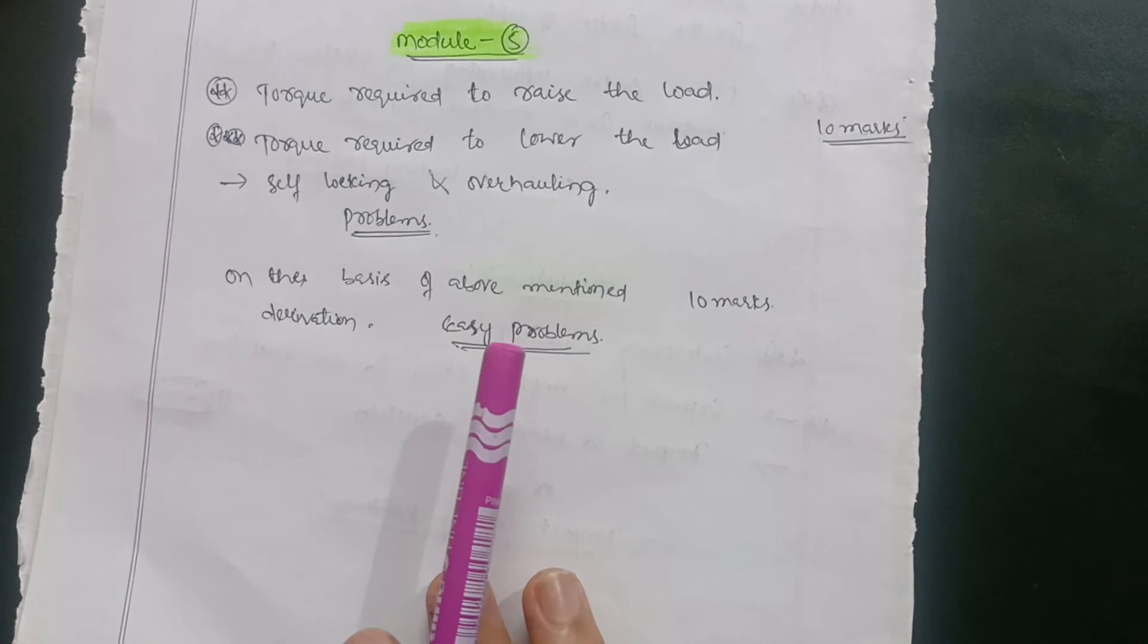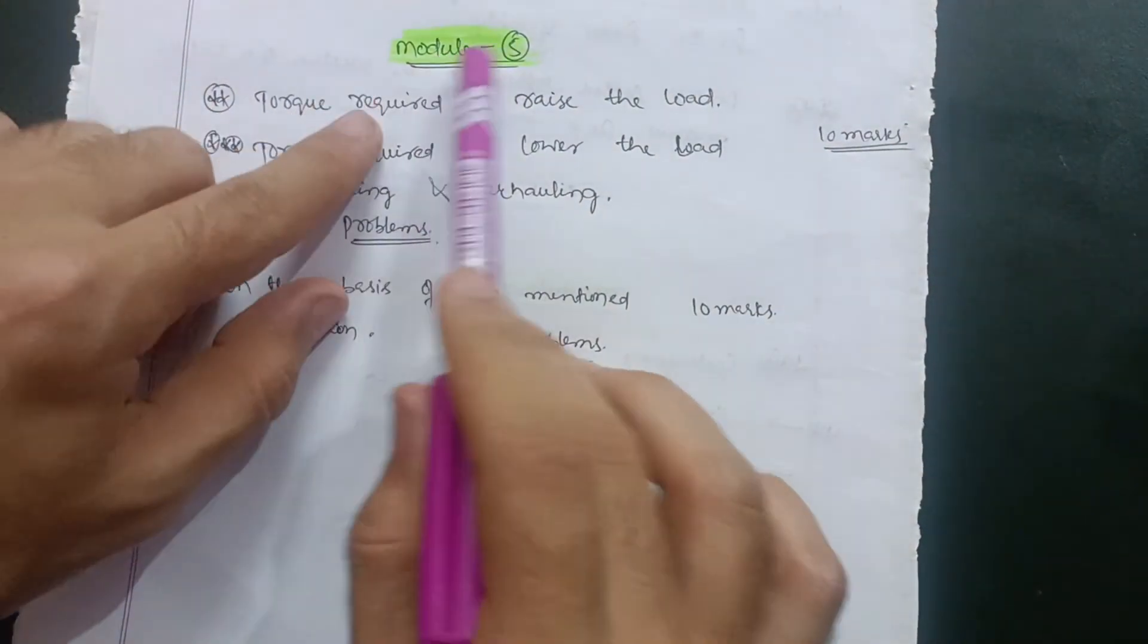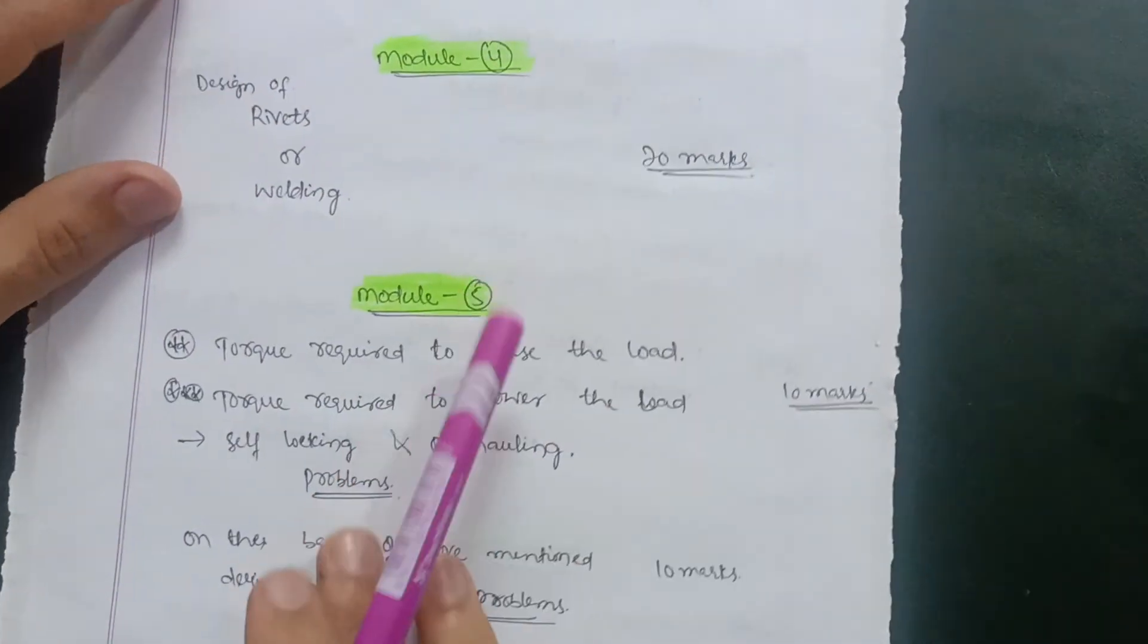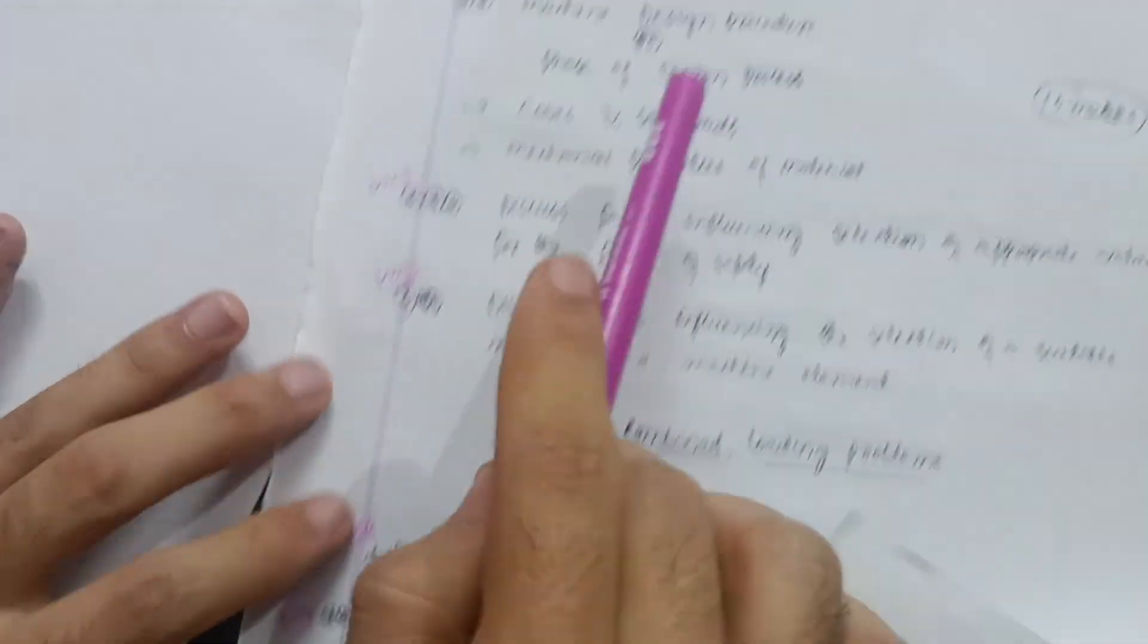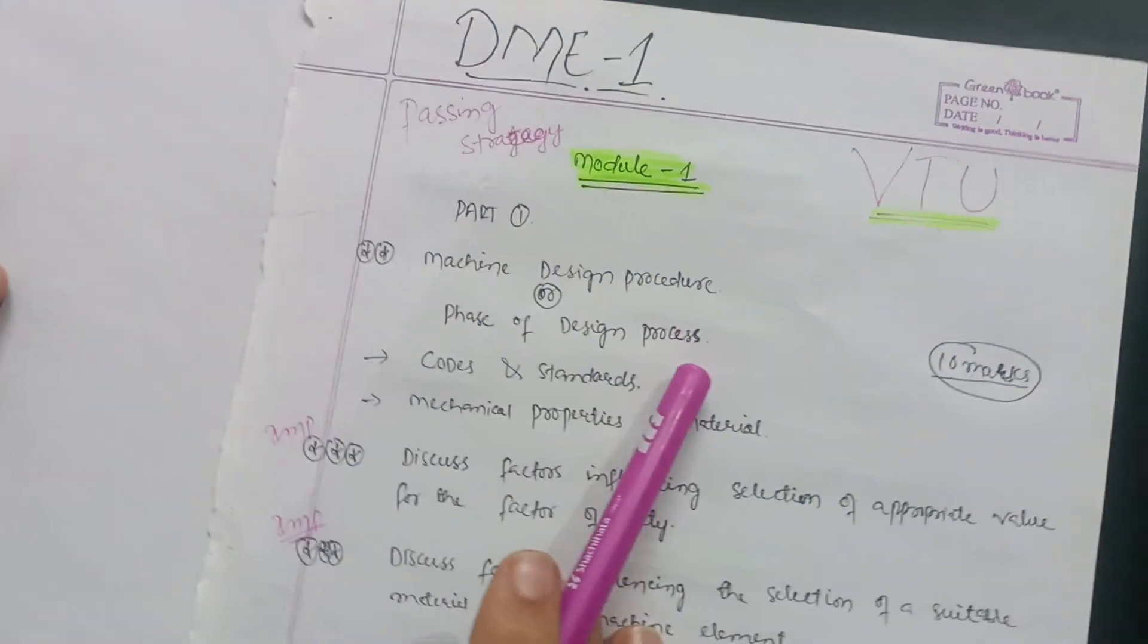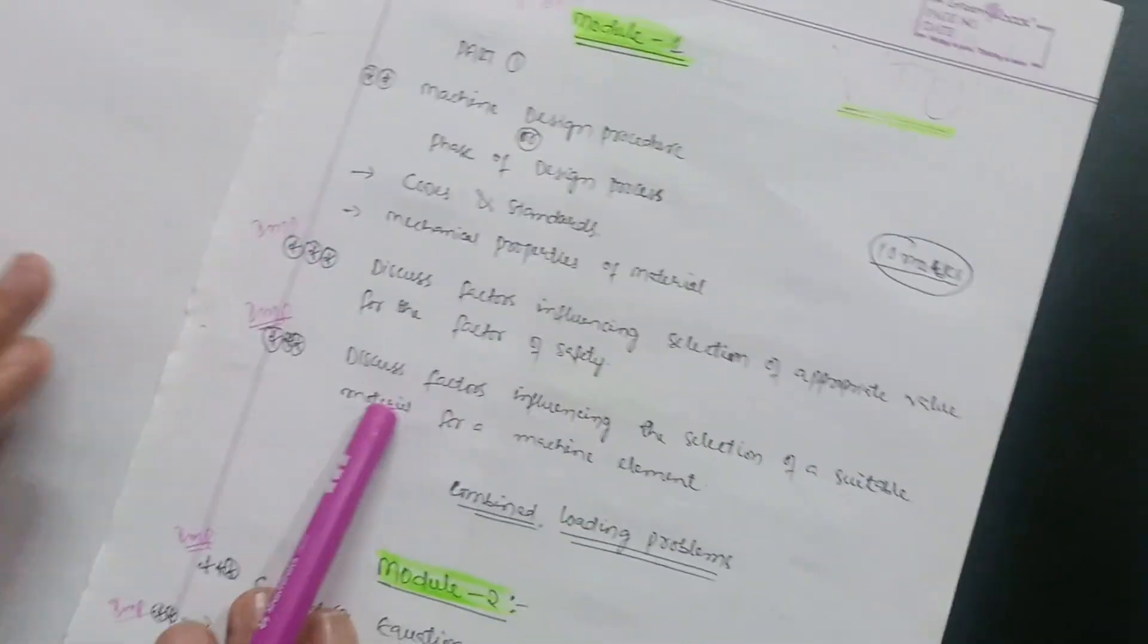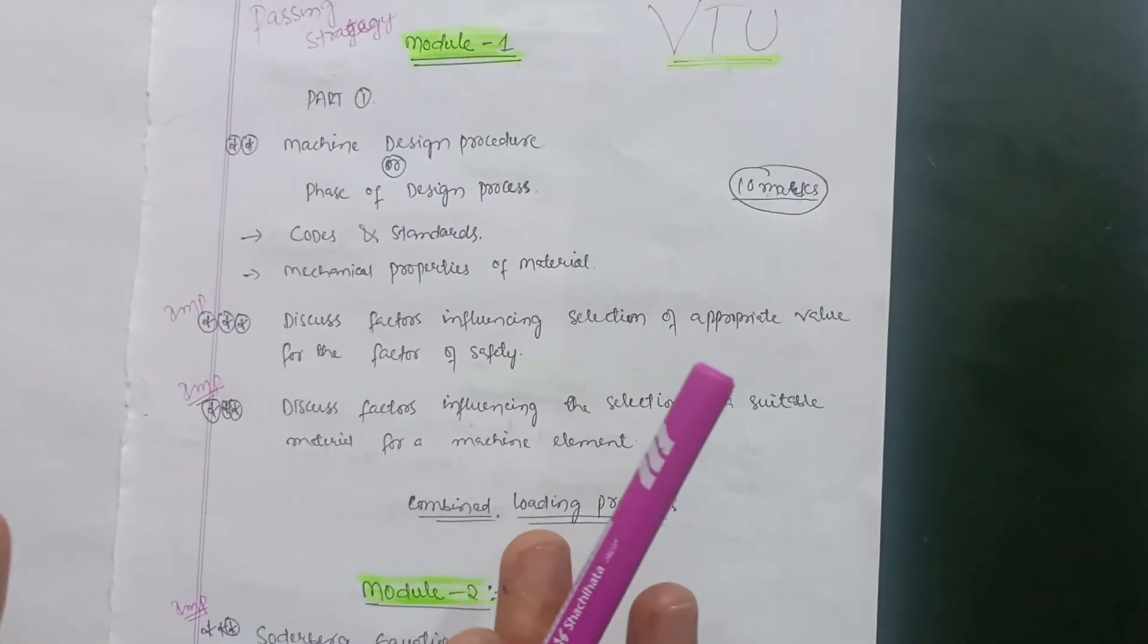Module fifth, module fourth, and module one are the easier ones. If you want to pass this subject, then go through this much content. This is enough to pass.